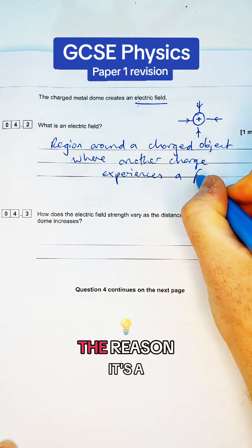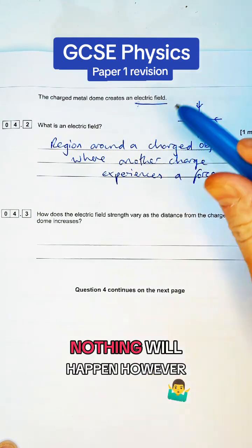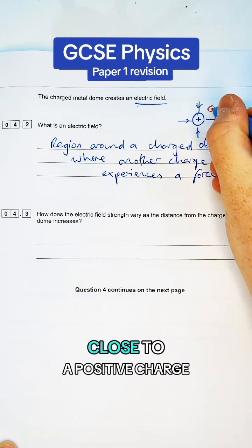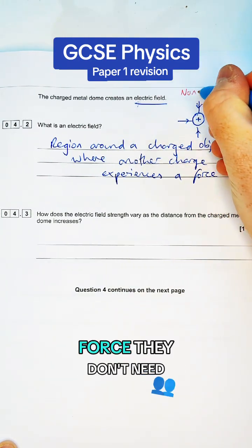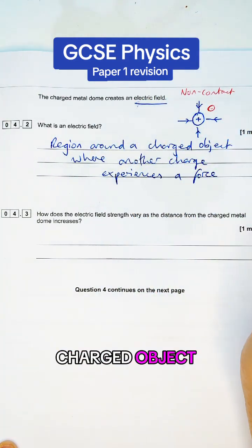Now, the reason it's a charged object is that if you put an uncharged object like a neutron around here, nothing will happen. However, if you put an electron, like a negative charge, close to a positive charge, we know they're going to attract. It's a non-contact force. They don't need to be touching for that to happen. So that's where the field comes in around the charged object.